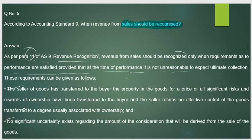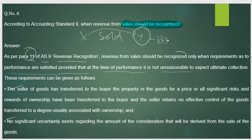The first condition: the seller has transferred property in the goods to the buyer for a price, and the significant risks and rewards of ownership have been transferred to the buyer. The seller retains no effective control over the goods transferred to a degree usually associated with ownership.